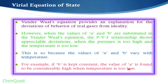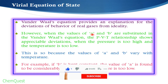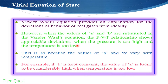The van der Waals equation provides an explanation for the deviation of real gases from ideality. However, when the values of a and b are substituted into the equation, the P-V-T relationship shows appreciable deviations when the pressure is too high and the temperature is too low. As stated, the values of a and b are dependent upon temperature and pressure, so the van der Waals equation fails to explain the pressure-volume-temperature relationship under extreme conditions.